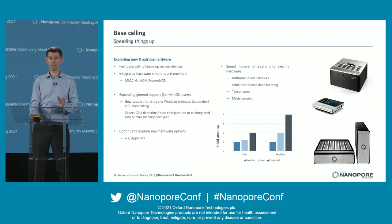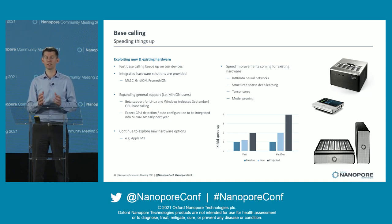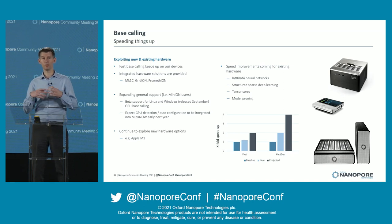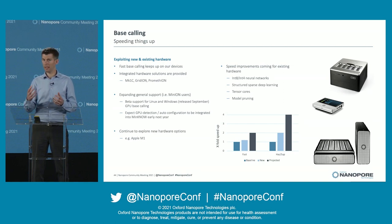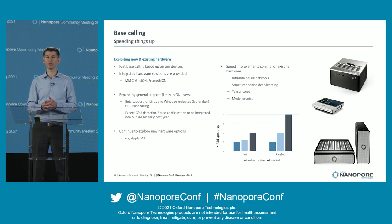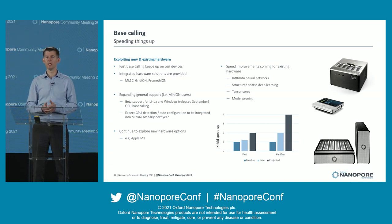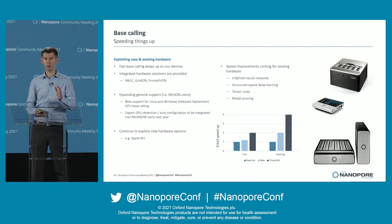Base calling is getting faster. Fast base calling keeps up on all our devices, and we provide integrated hardware solutions for that. The manifestation of base calling getting faster is that fast base callers are getting more accurate, and you'll see that as we release software updates. We're also expanding general support for GPU acceleration — we have beta support now for Linux and Windows integrated with MinKNOW — and we have GPU auto-detection features in progress, expected to release in the new year. We're continuing to look at new hardware, for example the Apple M1 chips, and we have a decent work stack of speed improvements particularly to rein in the speeds of those high accuracy and super accuracy base callers.